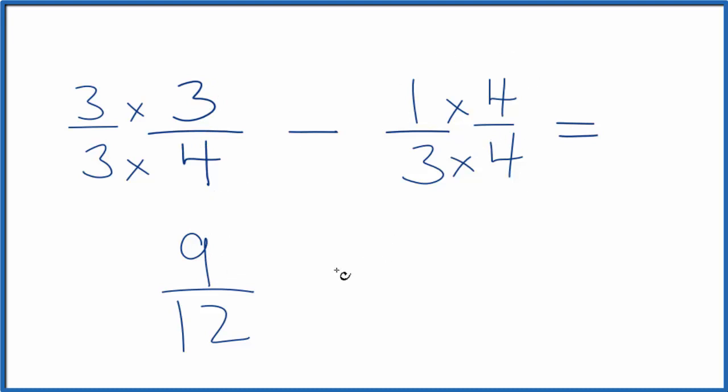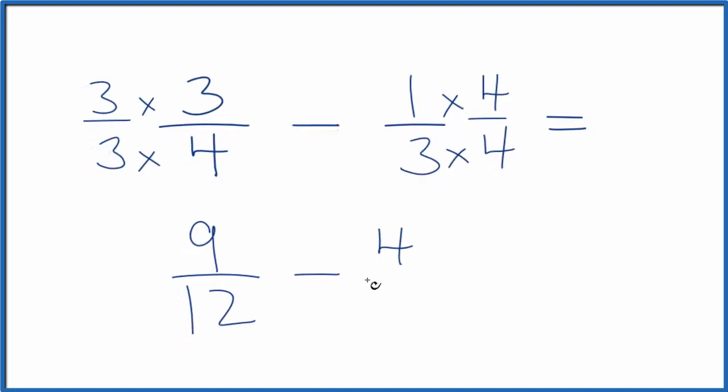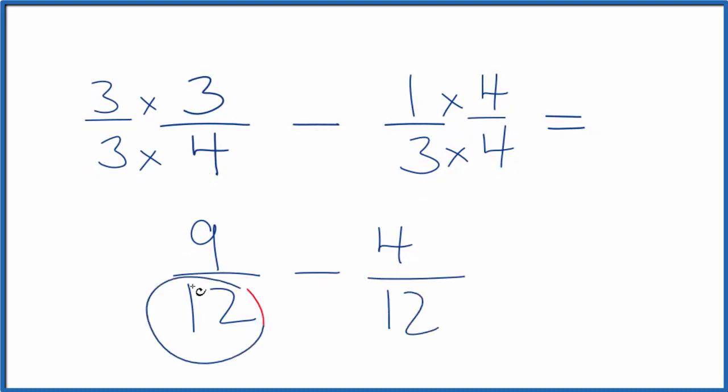Over here we have 1 times 4, that's 4, 3 times 4, that's 12. So we have the same denominator. What we do is we subtract 9 minus 4. That gives us 5, and we just bring the 12 across.